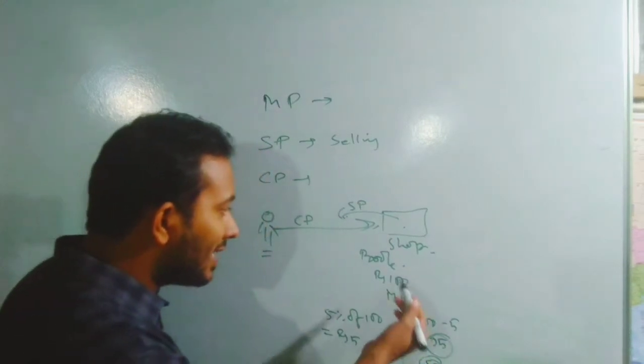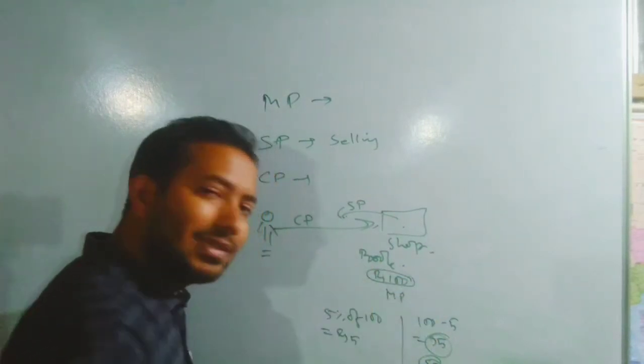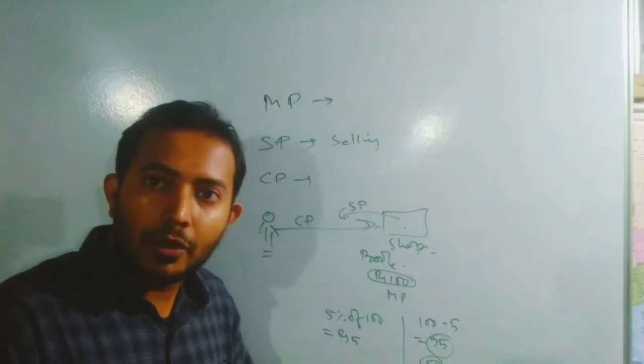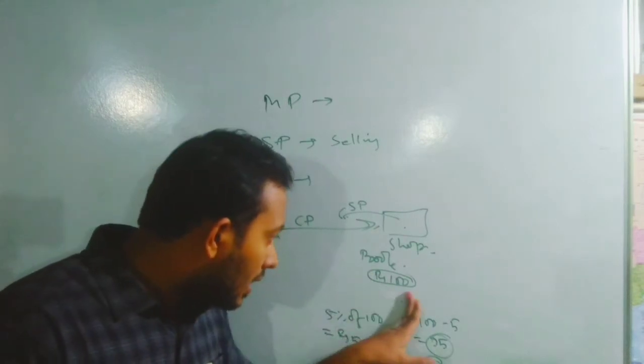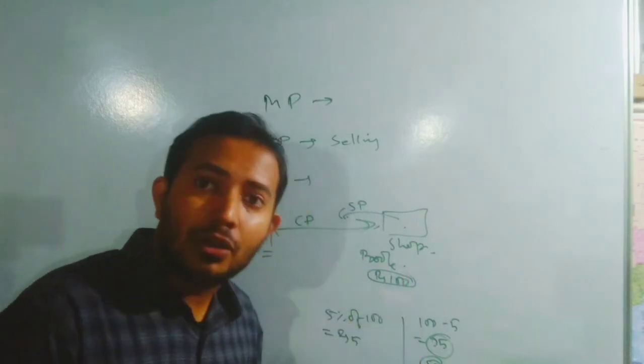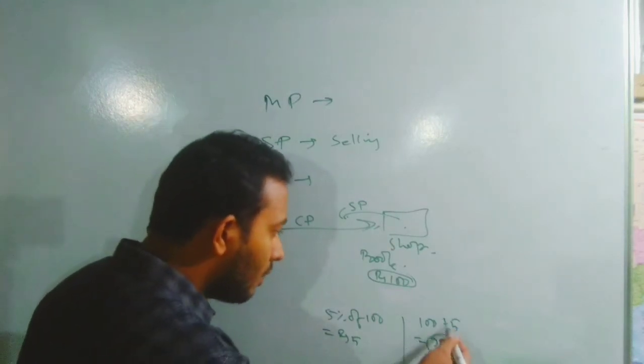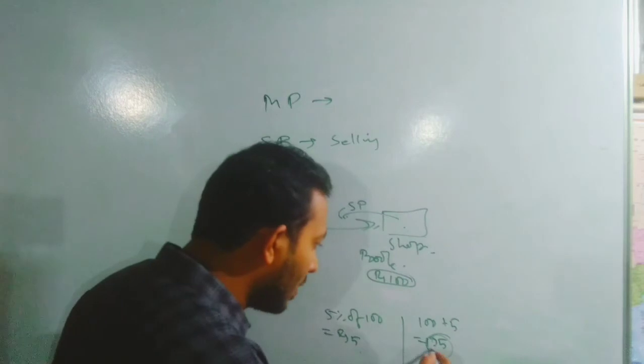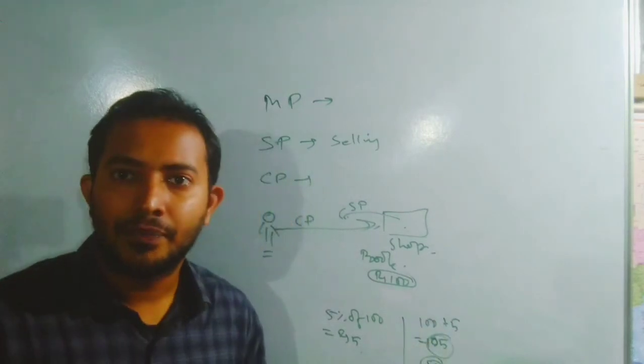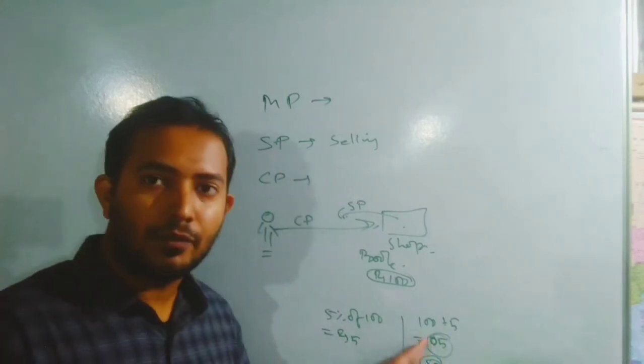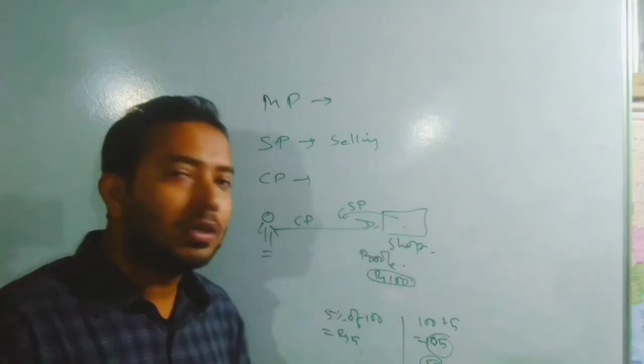That means if I say that this is your rupees 100 that is your mark price. But I am not getting any discount. But I am charging extra amount. That is 5% tax. That will be 5 will be added. That means I need to pay 105 rupees. For me it will be cost price and for the shopkeeper it will be selling price.